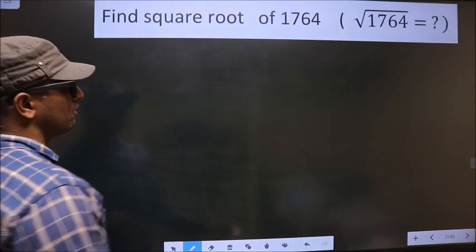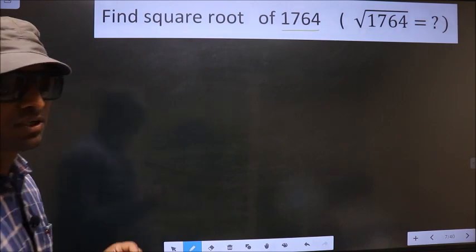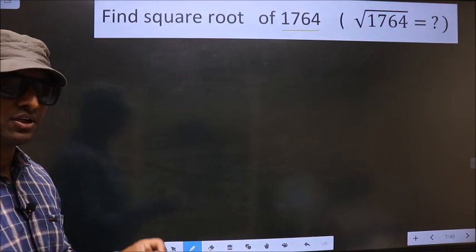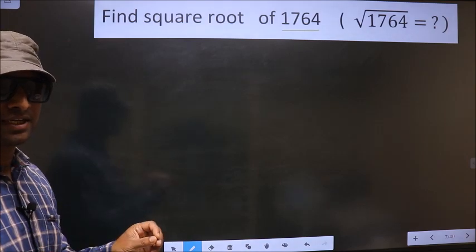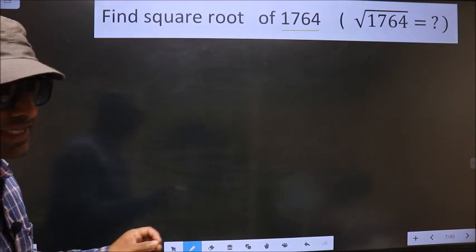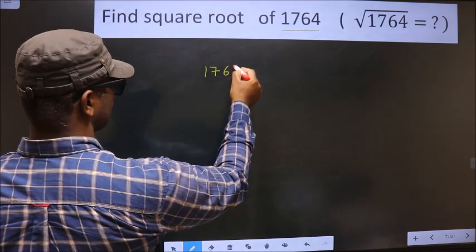Find square root of 1764. To find the square root by long division method, for that first we should frame it in this way, that is C, 1764.